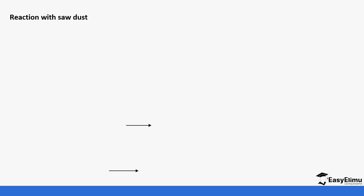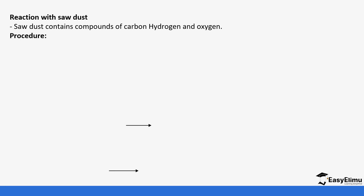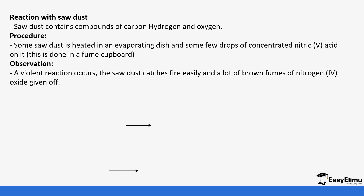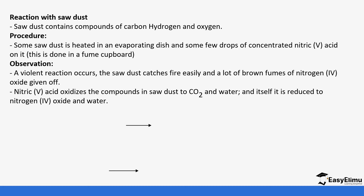Nitric acid also reacts with sawdust. Sawdust is a compound of carbon, hydrogen, and oxygen — it is a hydrocarbon but also contains oxygen. When some sawdust is heated in an evaporating dish with a few drops of concentrated nitric acid, done in a fume chamber, we see a violent reaction as the sawdust catches fire and a lot of brown fumes are given off. Nitric acid oxidizes the compounds in sawdust to carbon dioxide and water, and itself is reduced to nitrogen dioxide and water.